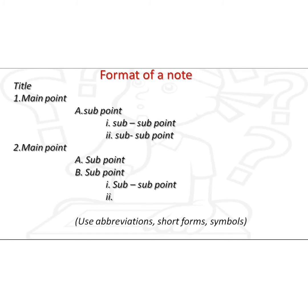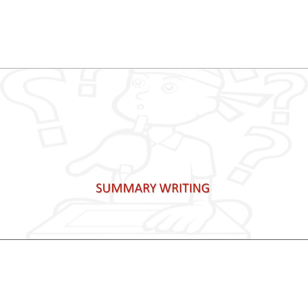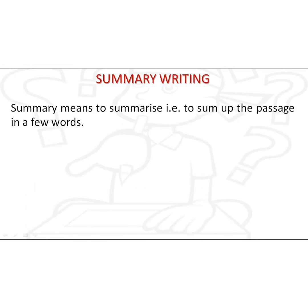The format of a note: first, you have to write a title — it is very important, and you can write the title in capital letters. If you find many main points, you can label them as main point one, main point two, and so on. If you find sub points within a main point, you can add those as well, and further sub-sub points can also be mentioned. You can also use abbreviations and short forms.